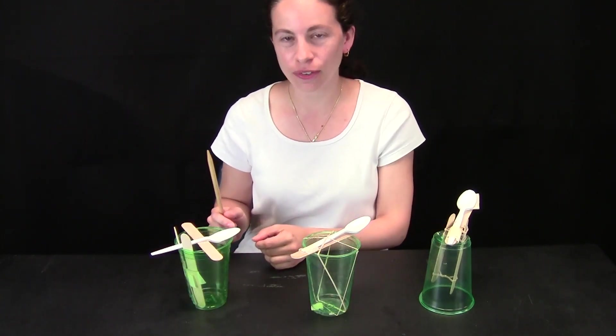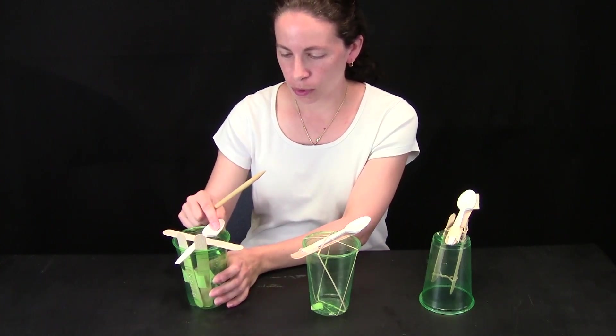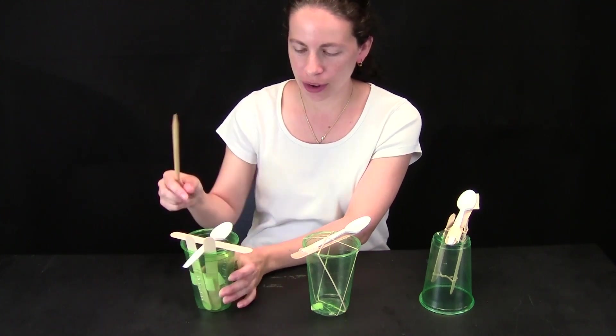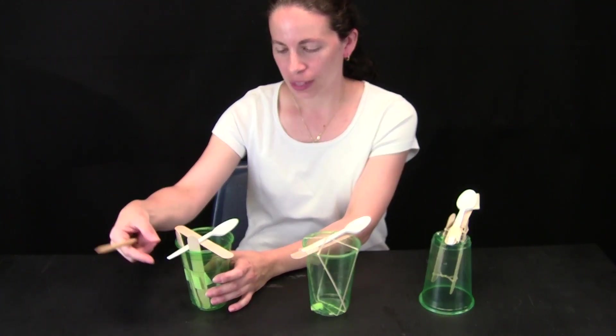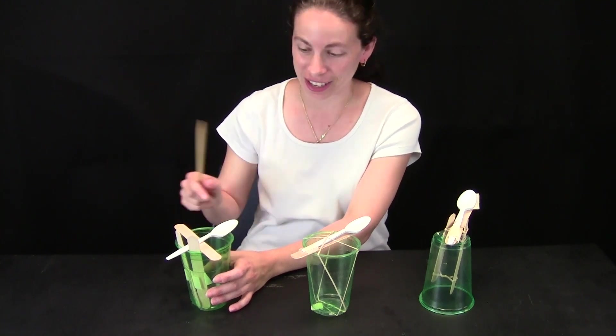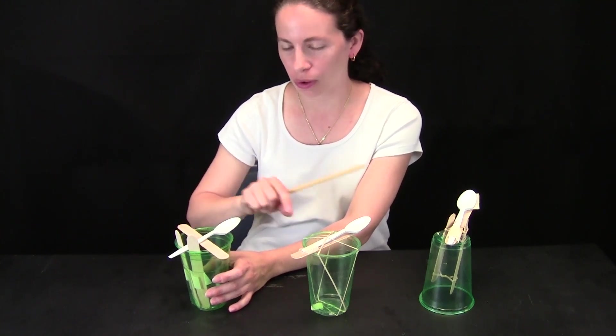This group used a different way. They wanted the spoon to be propped up but they didn't use any rubber bands. Instead, they taped two craft sticks where they placed the spoon, and then they placed the third one above it so the spoon wouldn't fall into the cup. And again to launch it, just pull.